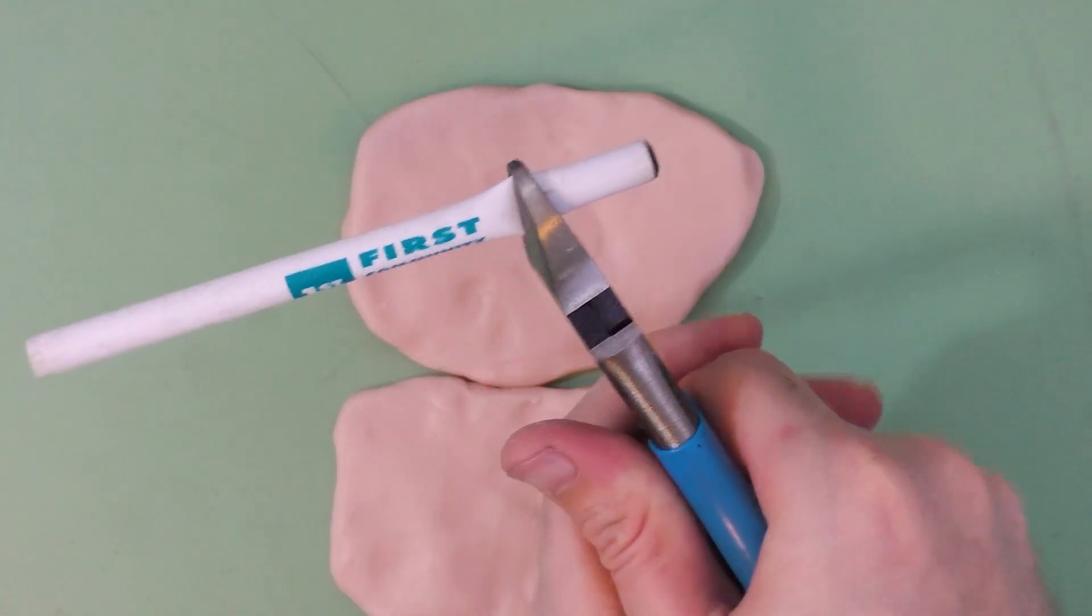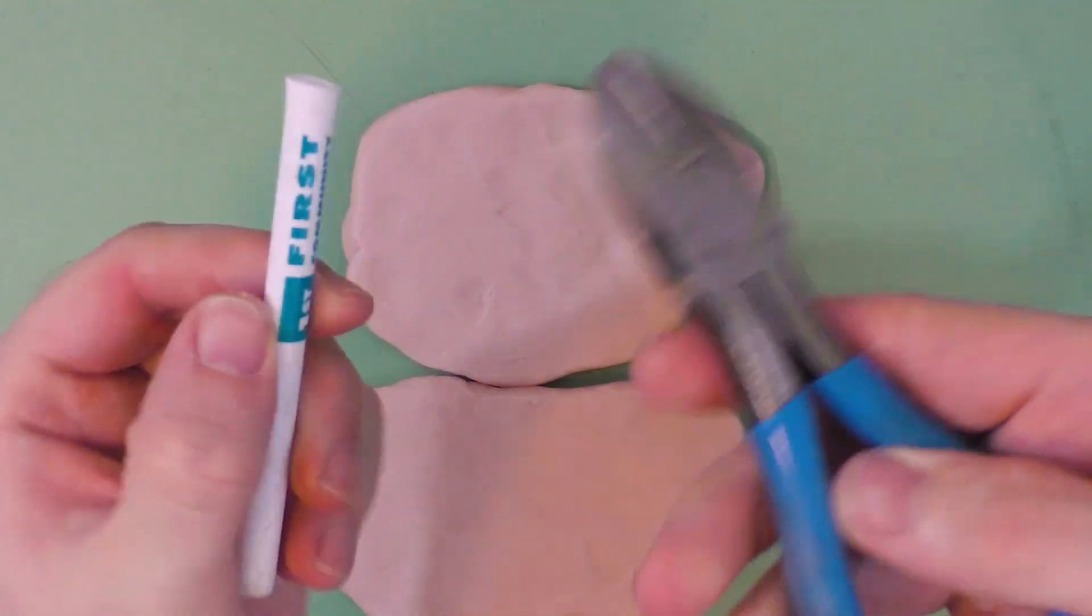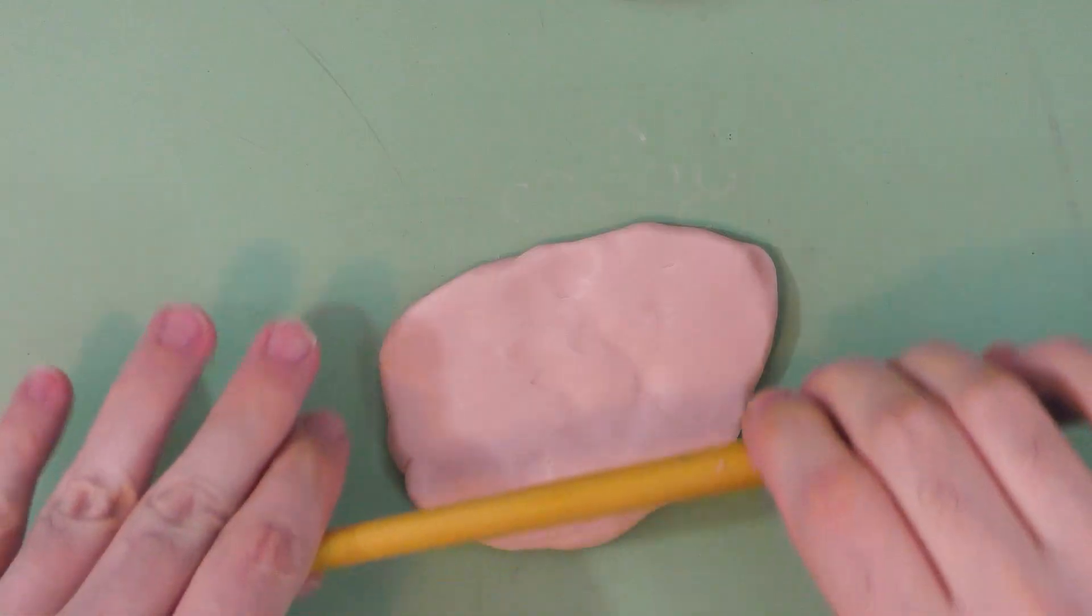All you need is a cylinder that the clay won't stick inside of. Here I'm using a pen. I've removed the tip and I'm cutting off the back end of it.